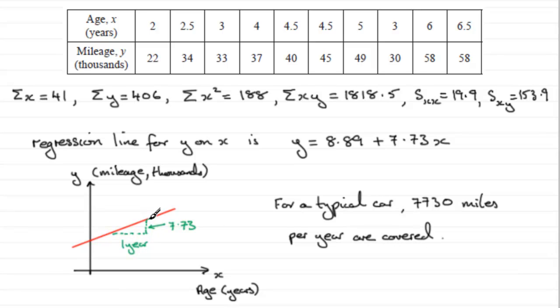All right, so it's based on gradient then. For every one unit across here, that's how much you rise by.